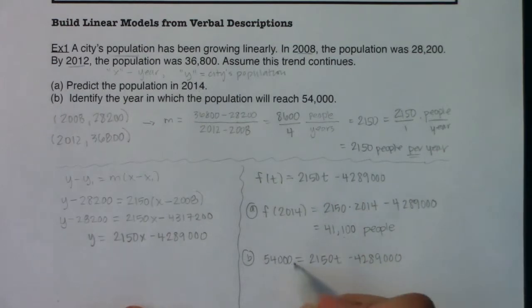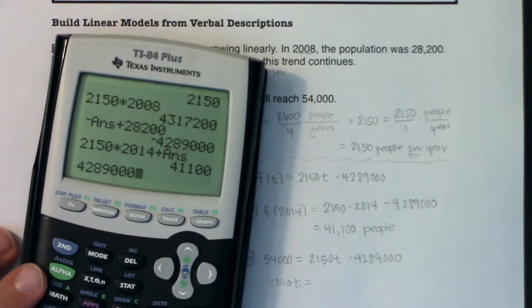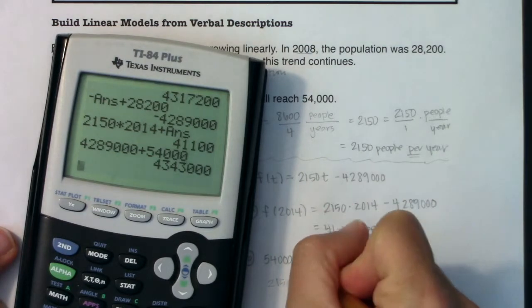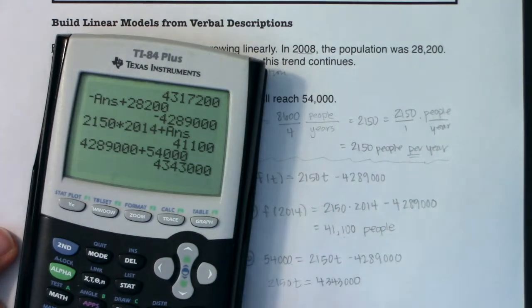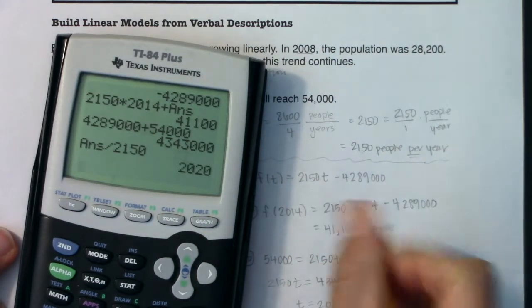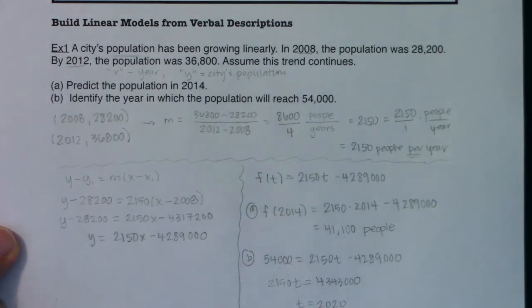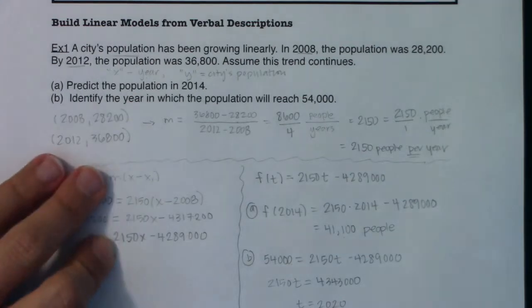But let's solve for T. If I add this over, I'm going to get 2150T is equal to, let's see what, 4,289,000 plus 54,000 leaves me with. And I would get here, 4,343,000. I'm going to divide that number by 2150. And it looks like the year is 2020. And the units on this are years, right? So I would say the population will reach 54,000 in the year 2020.